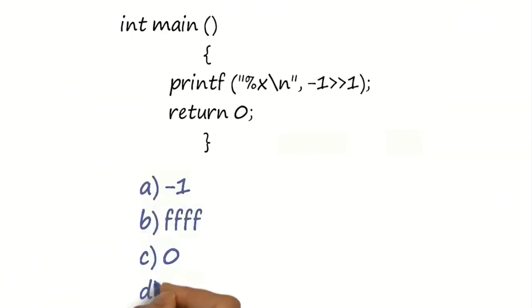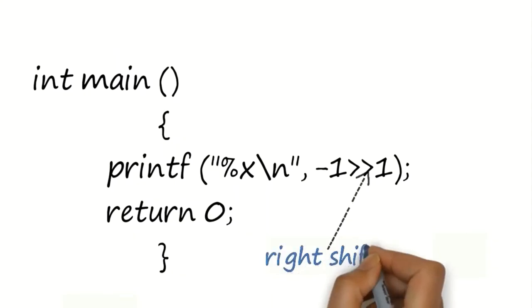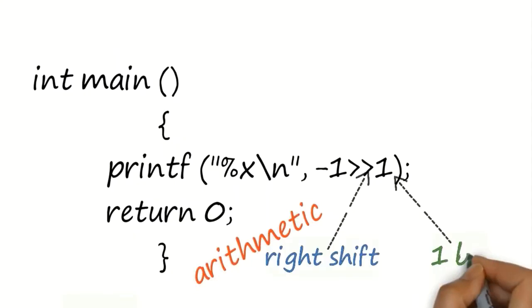Hence, in order to solve this problem, we would use right shift of type arithmetic by 1 bit.